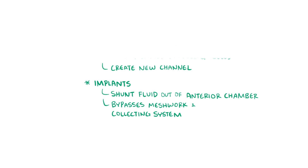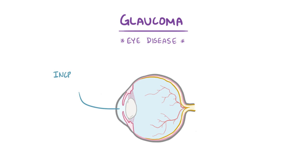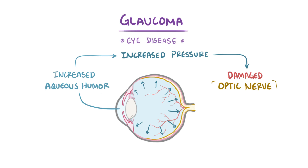As a quick recap, glaucoma is an eye disease where a buildup of aqueous humor causes increased pressure in the eye, and this damages the optic nerve and can result in blindness.